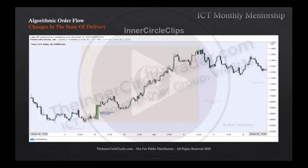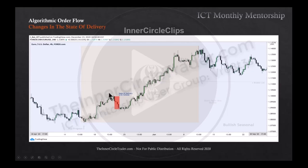Dropping down into the four-hour chart — in this area here we have our first run on buy side liquidity. So the state of delivery is on the buy side: candles are expanding on the upside with the expectation to run into levels of buy side liquidity. We have an initial run up into an imbalance, then we drop — the state of delivery is now on the sell side, expanding on the downside, reaching for sell side liquidity resting below this swing low and inside this buy side imbalance sell side inefficiency.